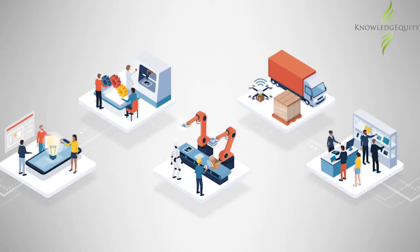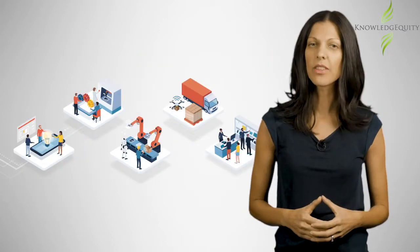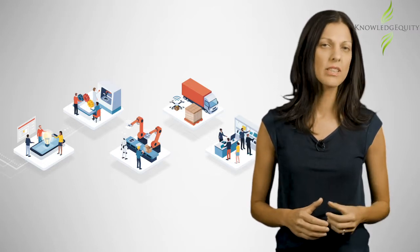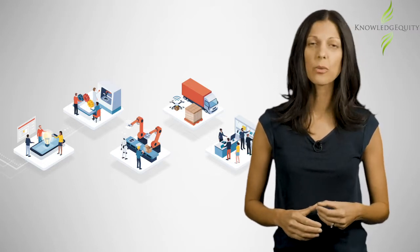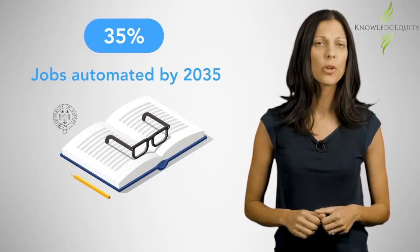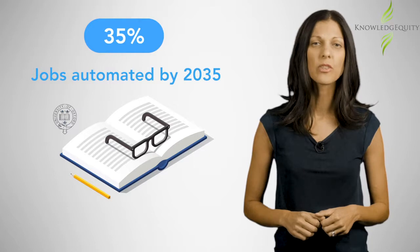Automation has always been seen as a threat to the worker, and with the exponential rise of technology in the workplace, the threat seems larger than ever. And it's true — there will be work that is previously completed by humans, completed 15 times faster through an automated process. A study from Oxford University predicted that 35% of jobs could be automated by 2035.